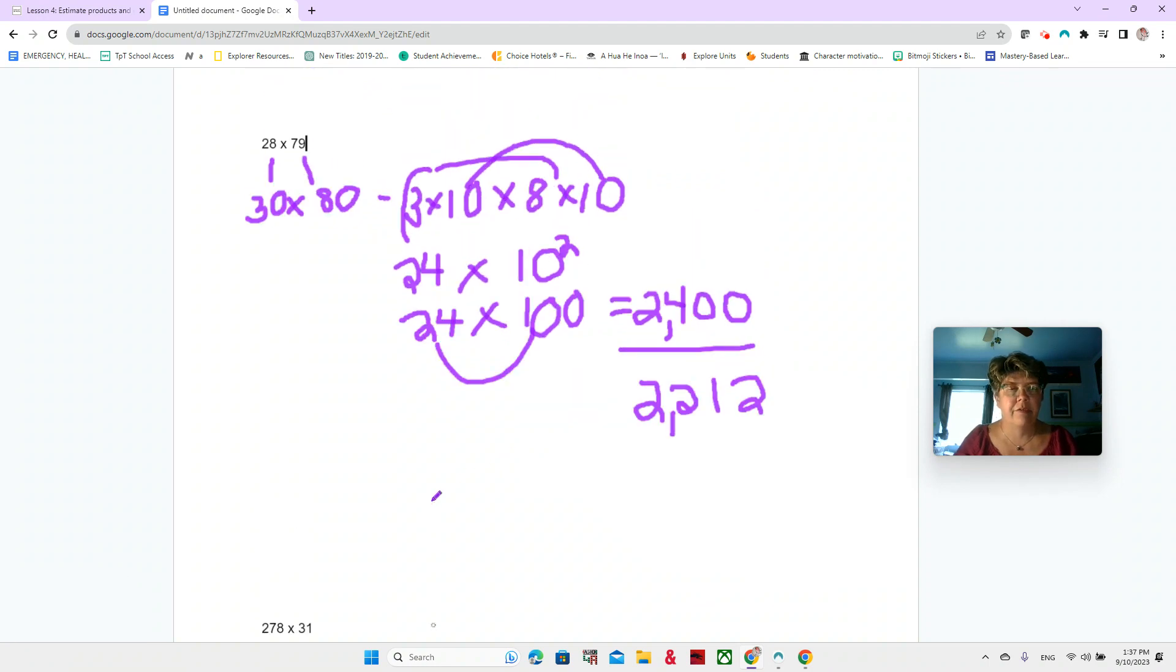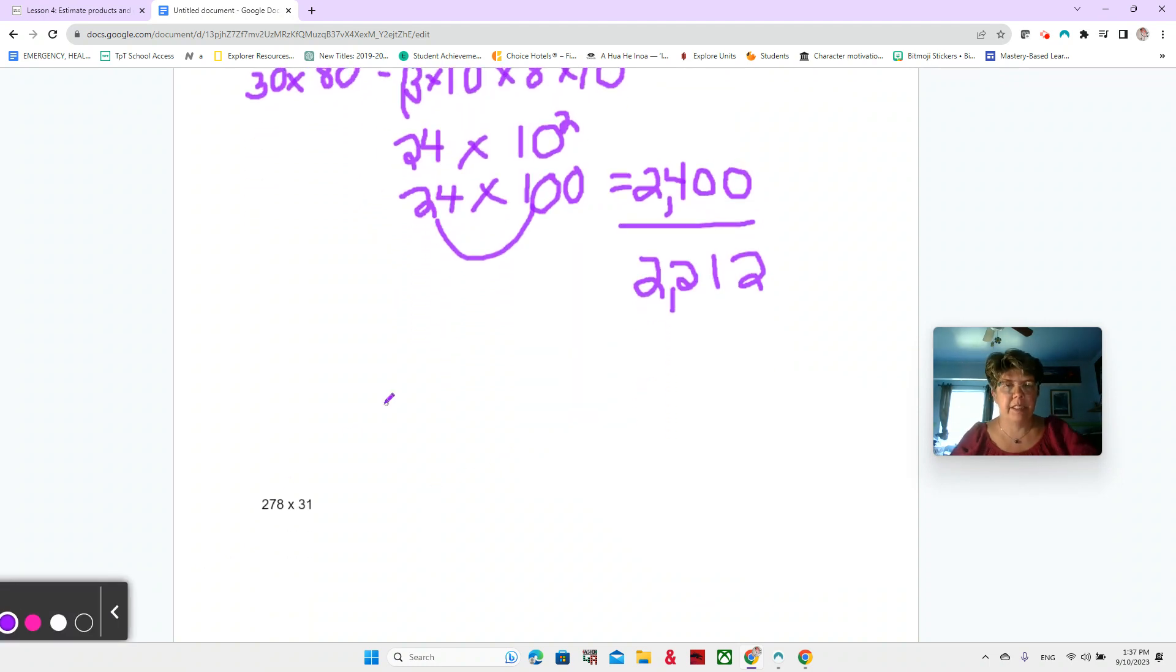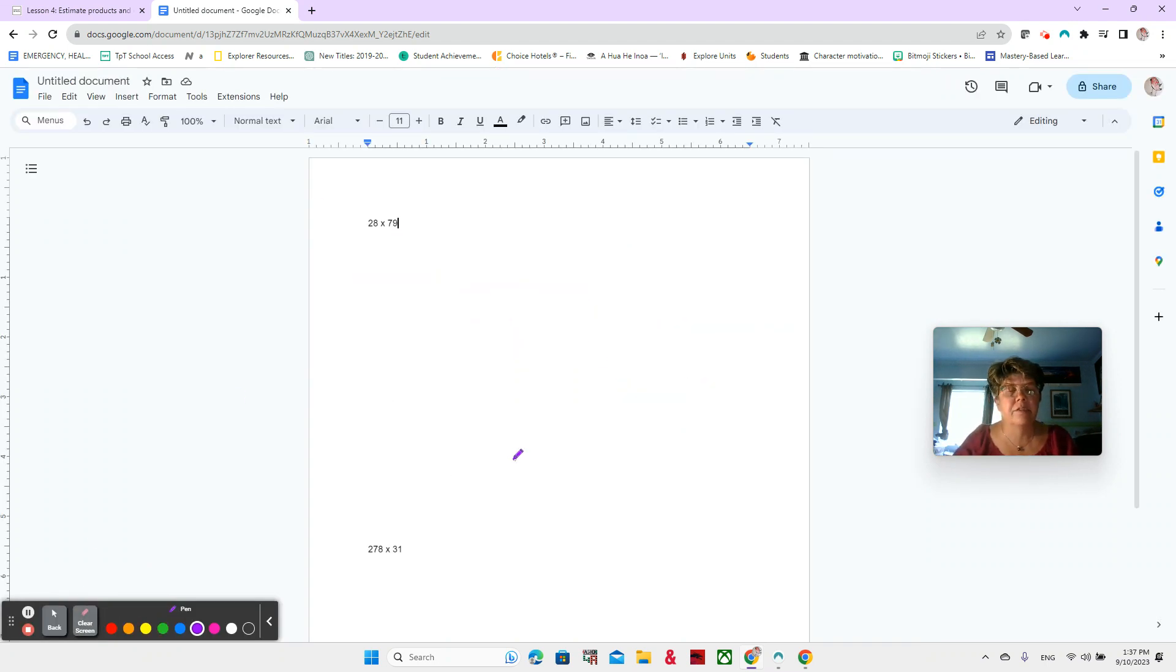Okay. Fabulous. Thank you for following along closely. Let me see. I think I need to shrink it a little bit and clear that screen. There we go. So now our next number we can see is 278 times 31. Okay. How can we estimate this product?